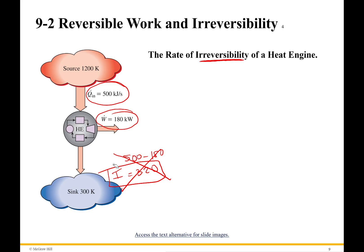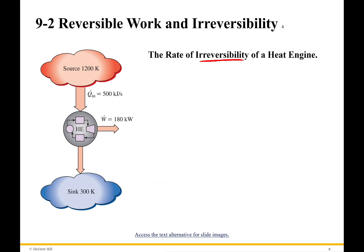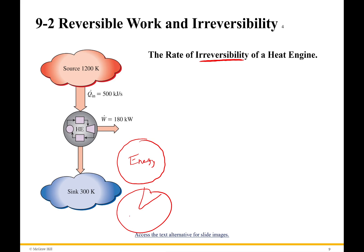Why is it wrong? Let's go back and think about exergy. Exergy was that portion of my energy — because energy is the whole pie — exergy is only a portion of that. And exergy is all the energy that can go to work. What that tells us right off the bat is that not all of my energy going into my system can go to work.